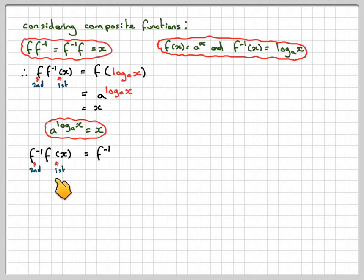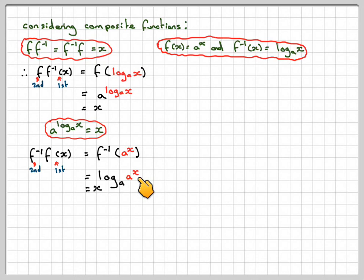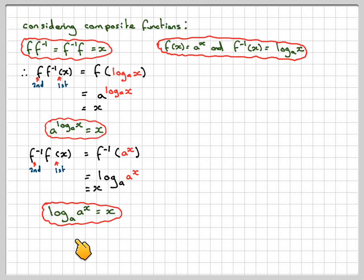Going the other way, f to the minus 1 of f of x means first applying f of x and then f to the minus 1. So we put a to the x into the log function, giving log to the base a of a to the x, which equals x. This is easy to see because by the third rule of logs, we can take the x down in front, and log a of a is 1. So we end up with the expression log to the base a of a to the x equals x.